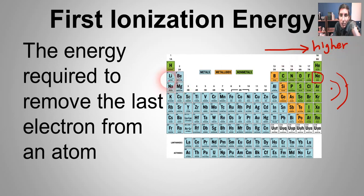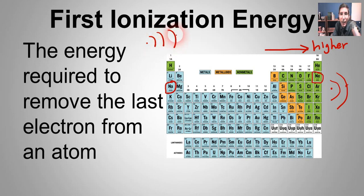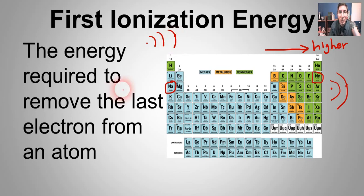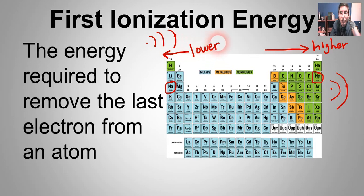On the other hand, look at sodium. It has three energy levels, and in that last energy level it only has one electron — that last s electron. It's already trying to lose the electron, so it's not going to require a whole lot of energy to pull that electron away. The ones on the left are going to have a much lower first ionization energy. As you go to the right it's higher; as you go to the left it's lower.